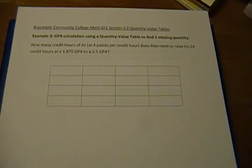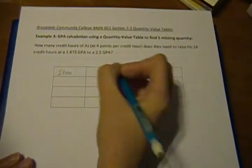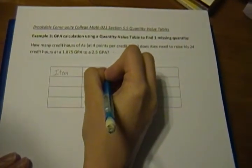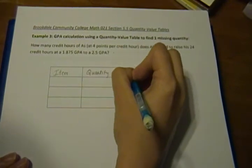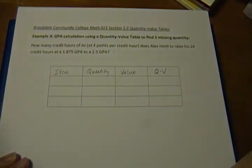Our problem is: how many credit hours of A's at 4 points per credit hour does Alex need to raise his 24 credit hours at 1.875 GPA to a 2.5 GPA? Let's start by filling in the headers for our table. The first column is our item, our second is our quantity, our third is our value, and the last is the Q times V, or our quantity times the value.